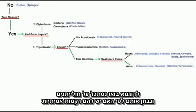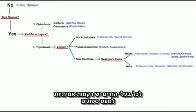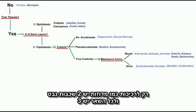For example, let's look at invertebrates and the diagnostic characteristic of true tissues. The only animals which lack them are sponges — all others have them. Next, we can look at the number of germ layers an organism has. Only cnidarians and ctenophores, which are basically jellyfish, have two, and all others have three.